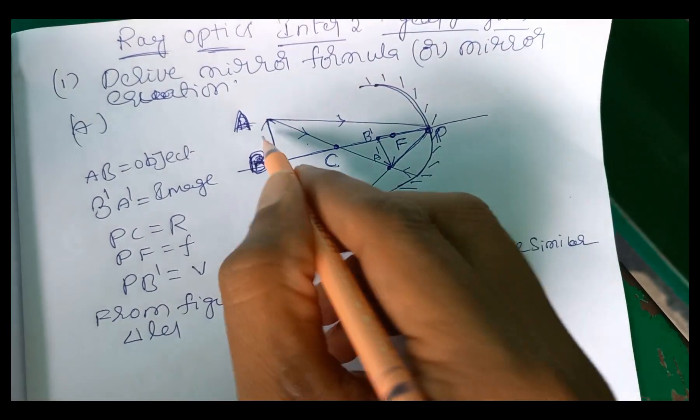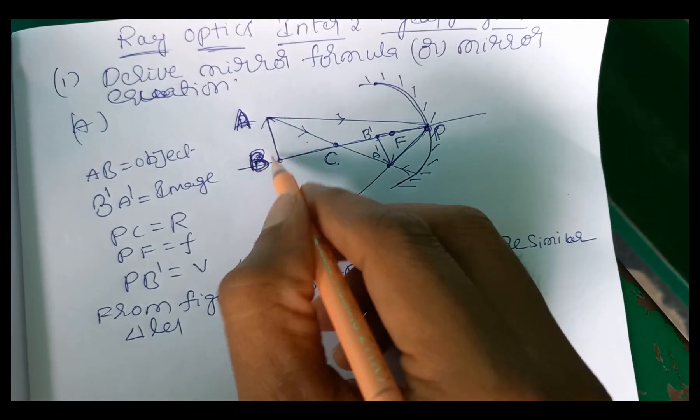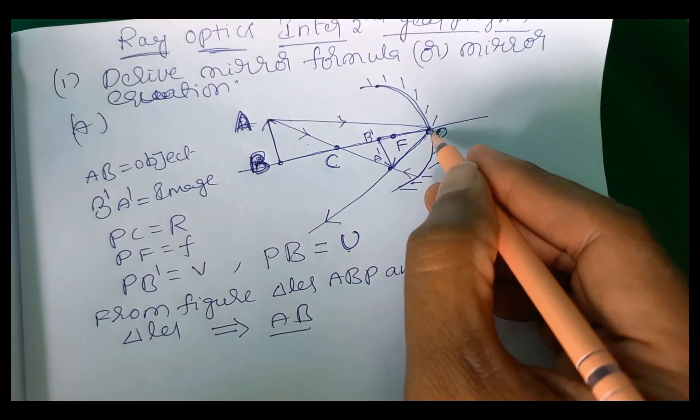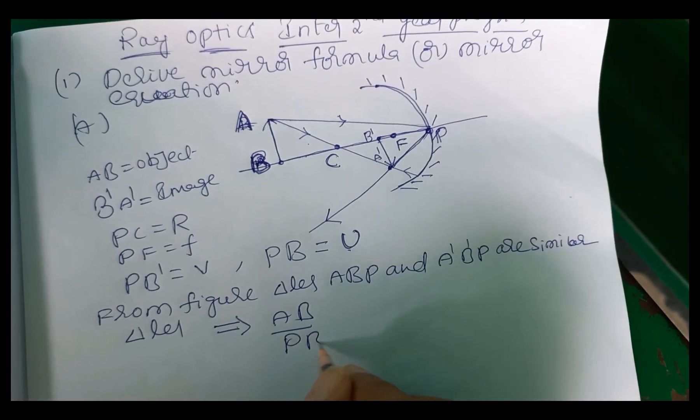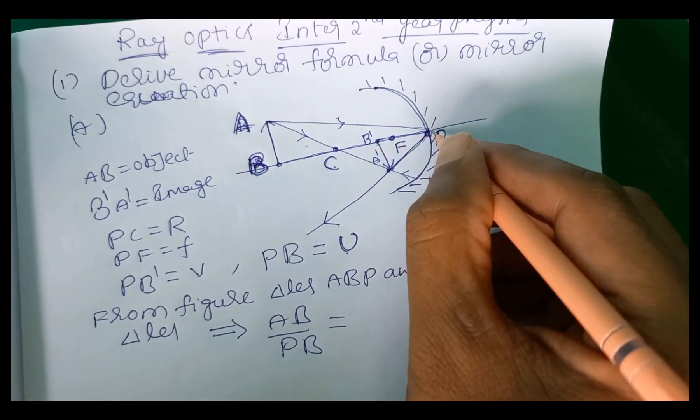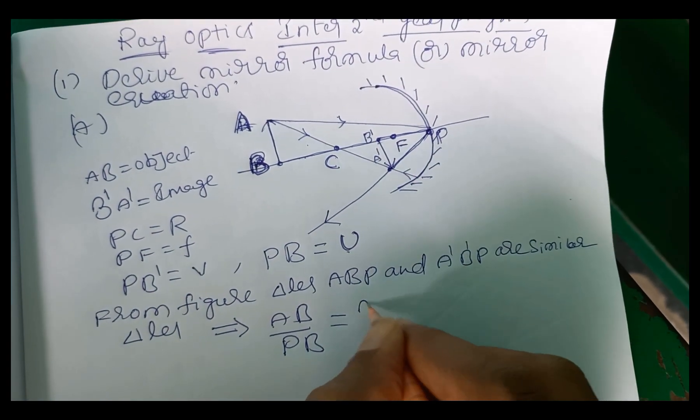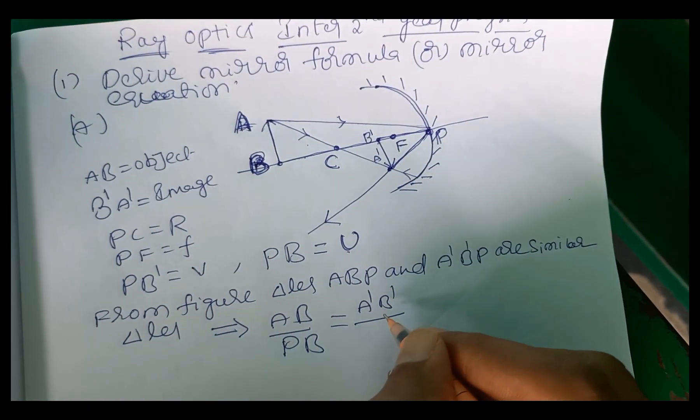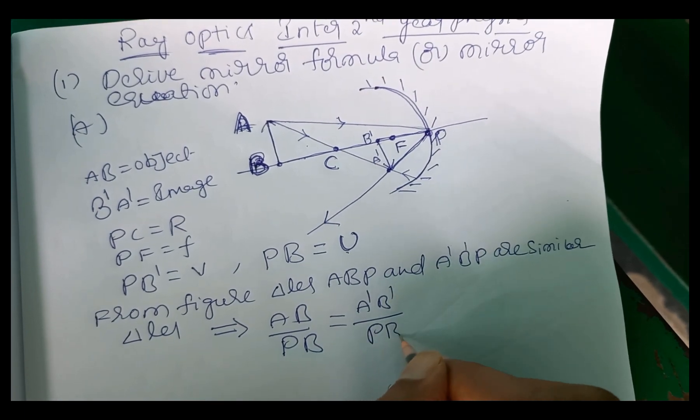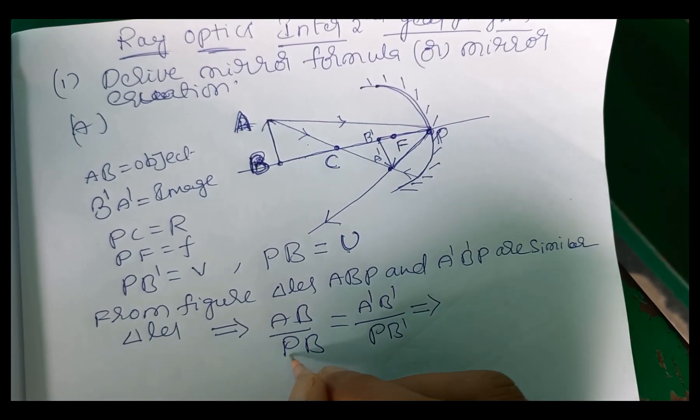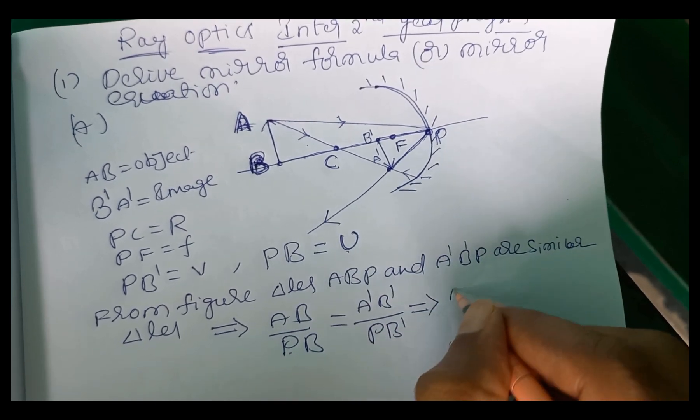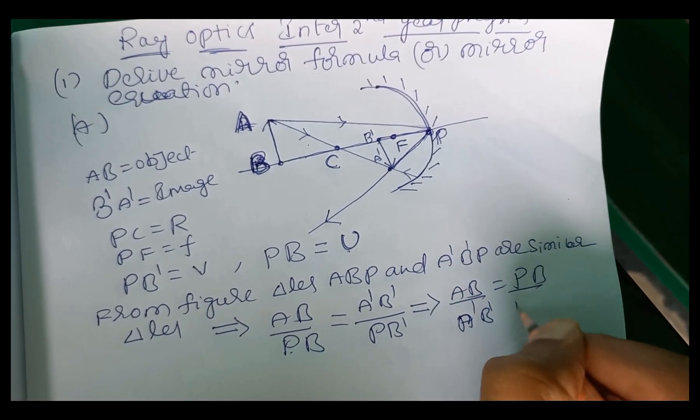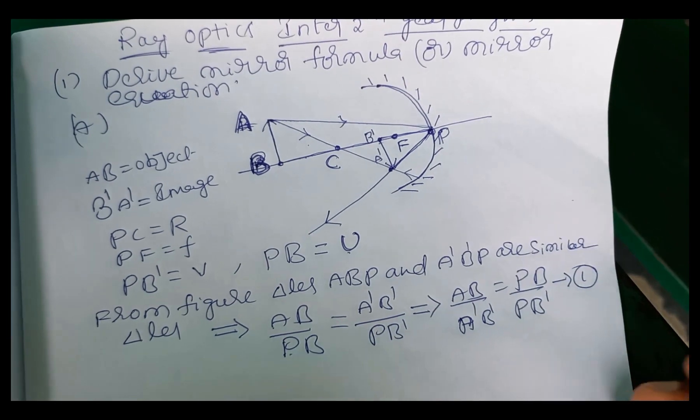This implies height and base. Base is AB, base is PB. Equal to the triangle ratio between height and base. Ratio between height and base, so height means A dash B dash, base means PB dash. So this implies simplification, if PB is here A dash B dash, AB by A dash B dash equal to PB by PB dash. It is equation 1.